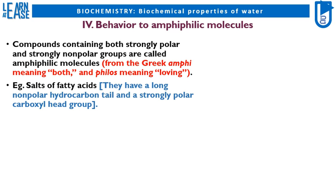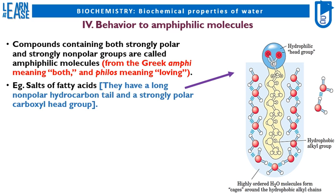E.g. salts of fatty acids. They have a long nonpolar hydrocarbon tail and a strongly polar carboxyl head group. The image on the right shows an amphiphilic molecule, that is fatty acid. In the image the aliphatic carbon chain is nonpolar and so it is termed as hydrophobic tail, whereas the carboxylate COO- is hydrophilic and this hydrophilic portion of fatty acid is termed as hydrophilic head.